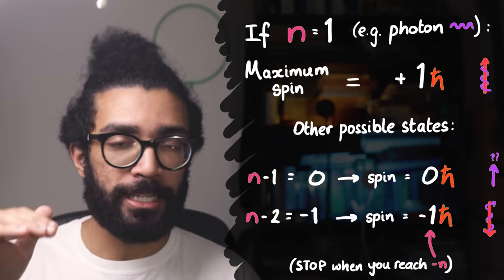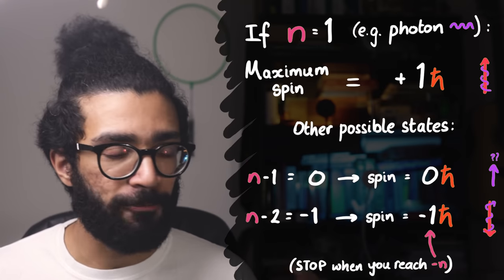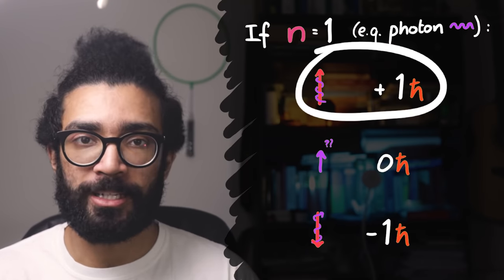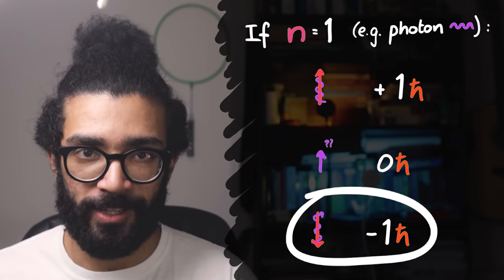And at this point, we've reached the negative value of our initial spin number. So we stop there. A photon has three possible spin states. One with angular momentum h-bar, one with angular momentum zero, and one with angular momentum negative h-bar.